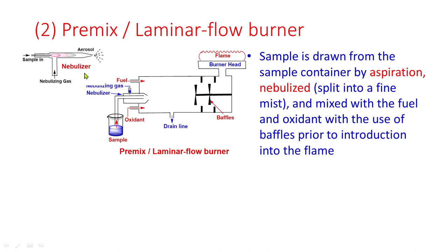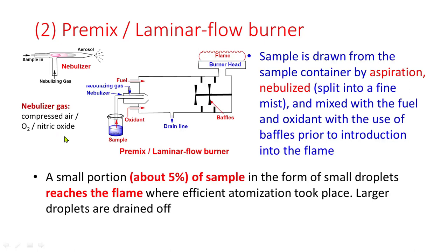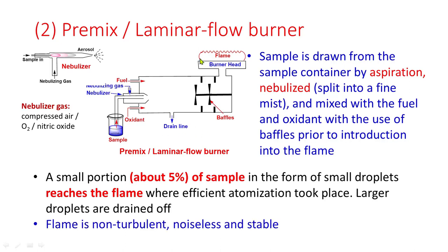This is the nebulizer. The sample enters from one side and nebulizing gas is forced through so that the sample is converted into an aerosol. The nebulizing gas can be compressed air, oxygen, or nitrous oxide. Only about 5% of the sample in the form of very small droplets reaches the flame, where efficient atomization takes place. Larger droplets are drained out. The resulting flame is non-turbulent, noiseless, and stable.